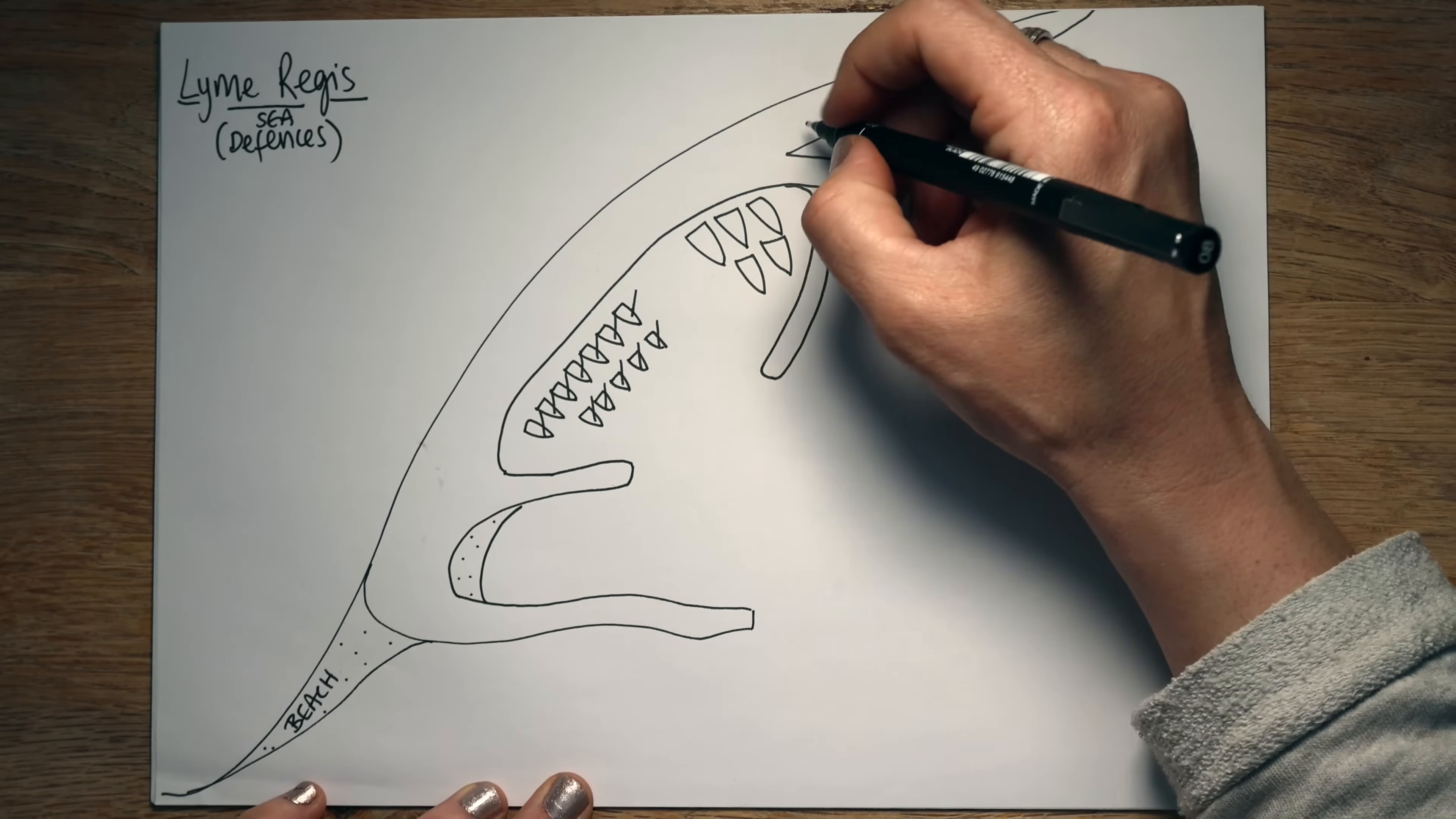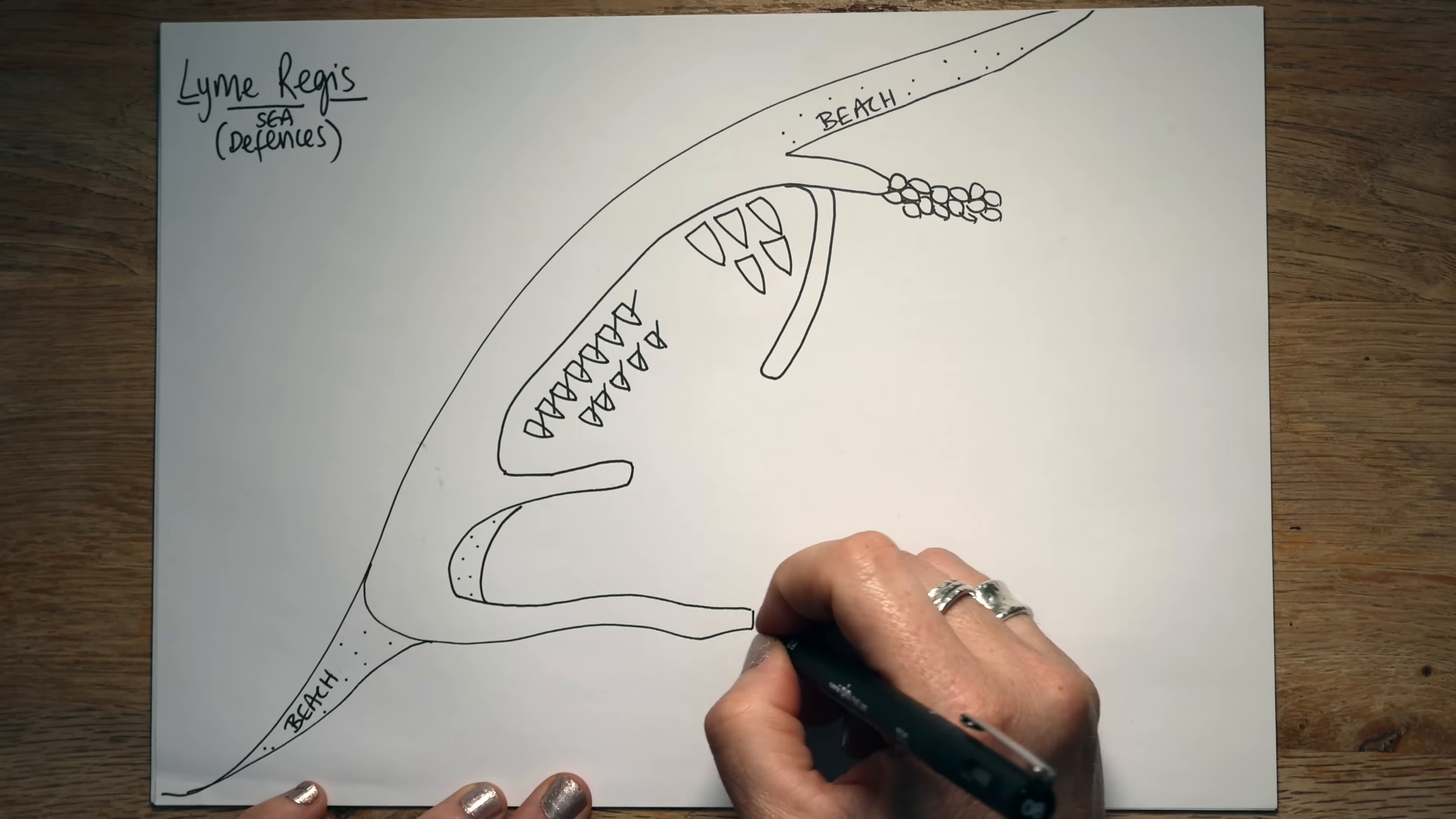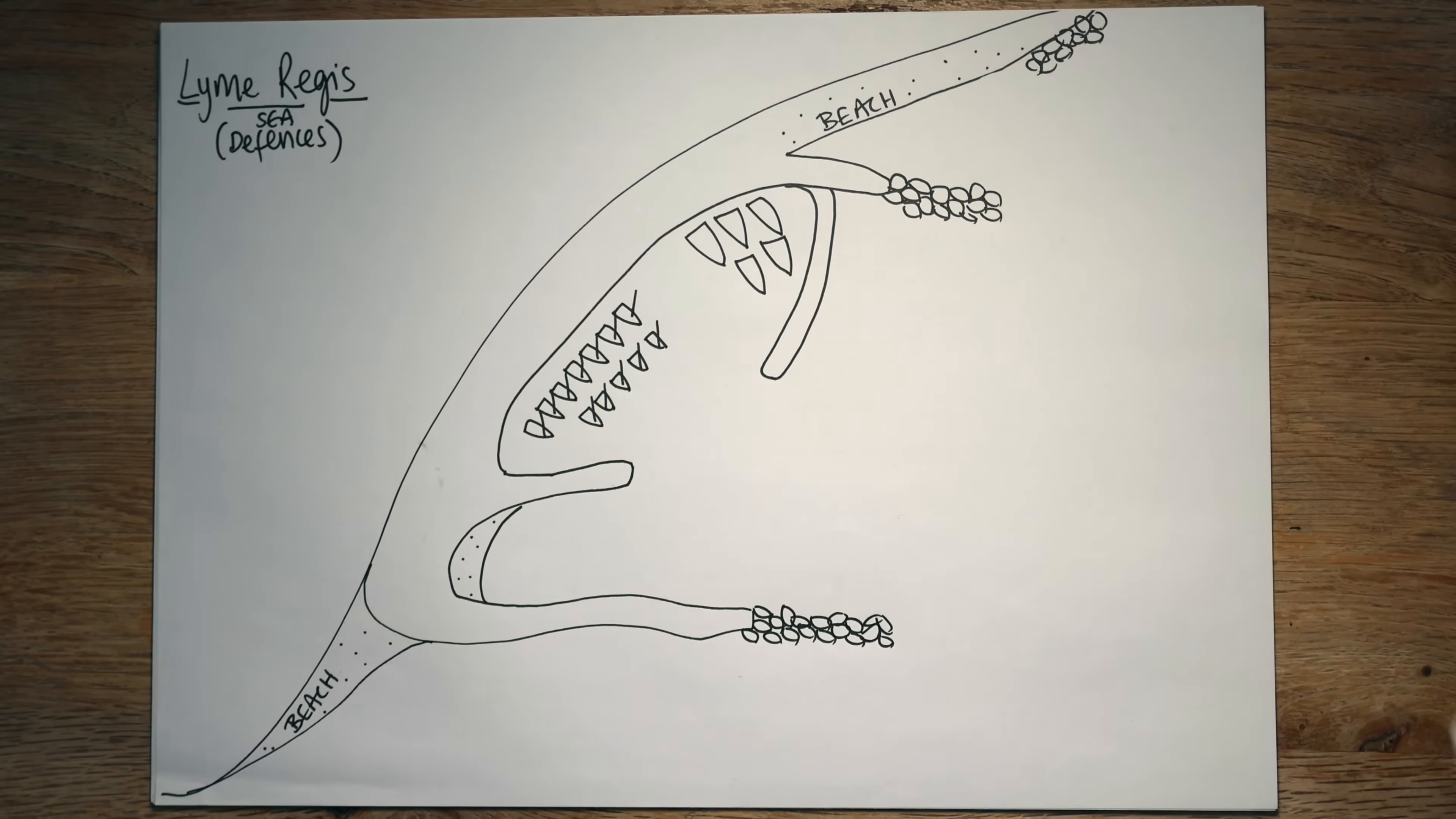And then over here we've got again more beach. So we'll just put some dots in place. And then our rock armour. So I'll talk a bit more about this in a minute when we label it. But if you just draw those big kind of granite boulders that you see down near us at Princeton, there's quite a few West Witterings and hailing. And these have been put in at Lyme Regis to protect the existing defences.